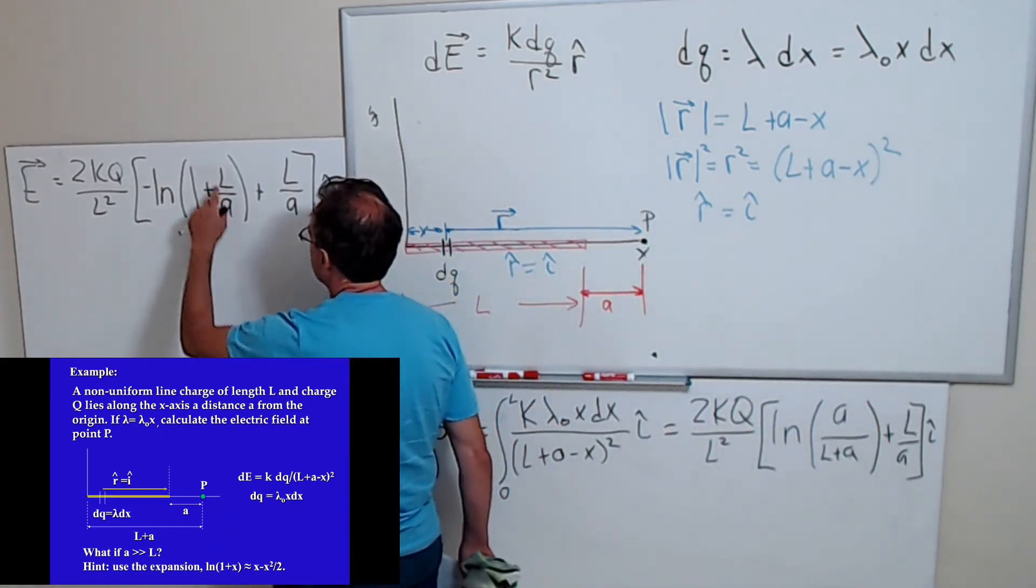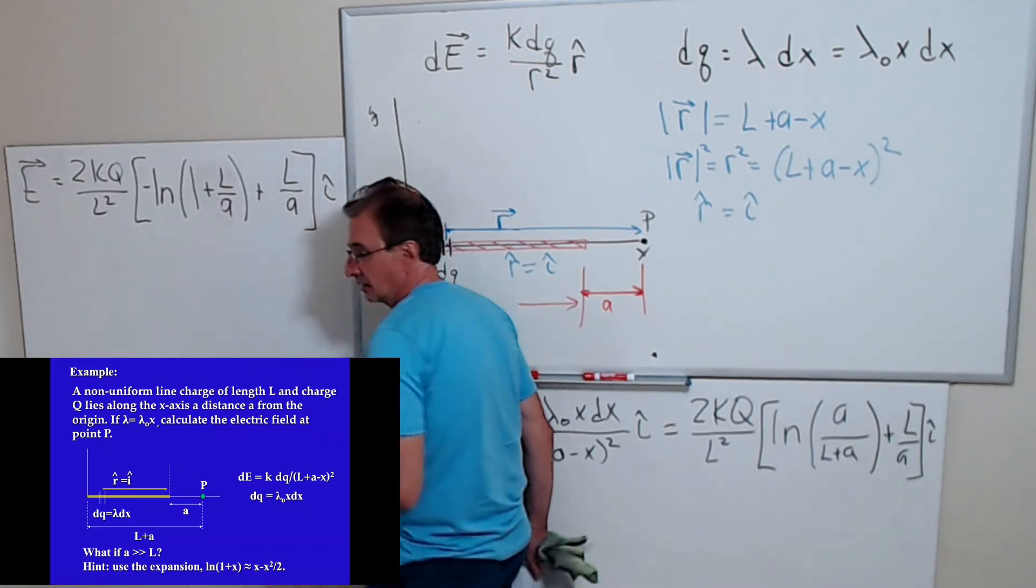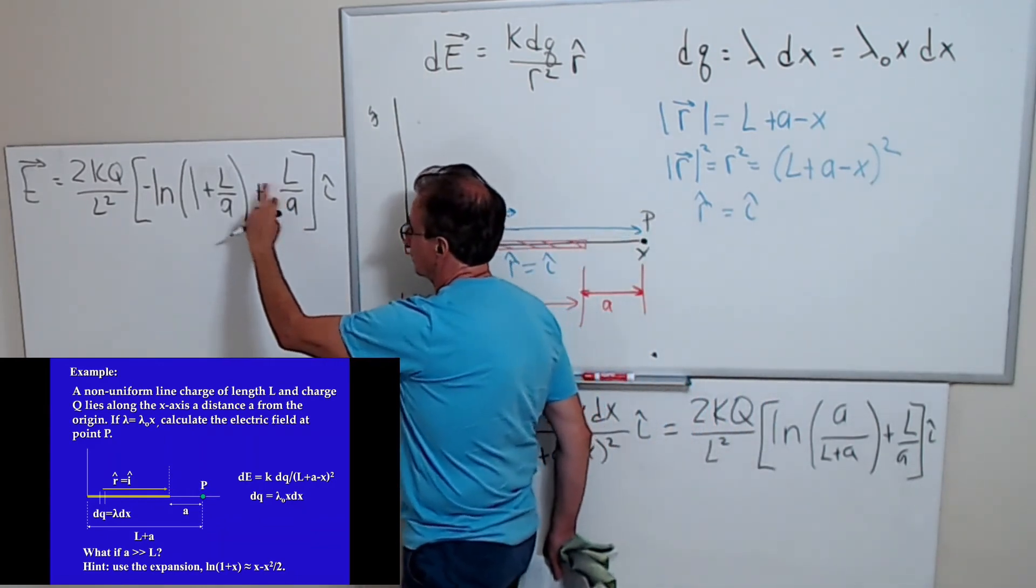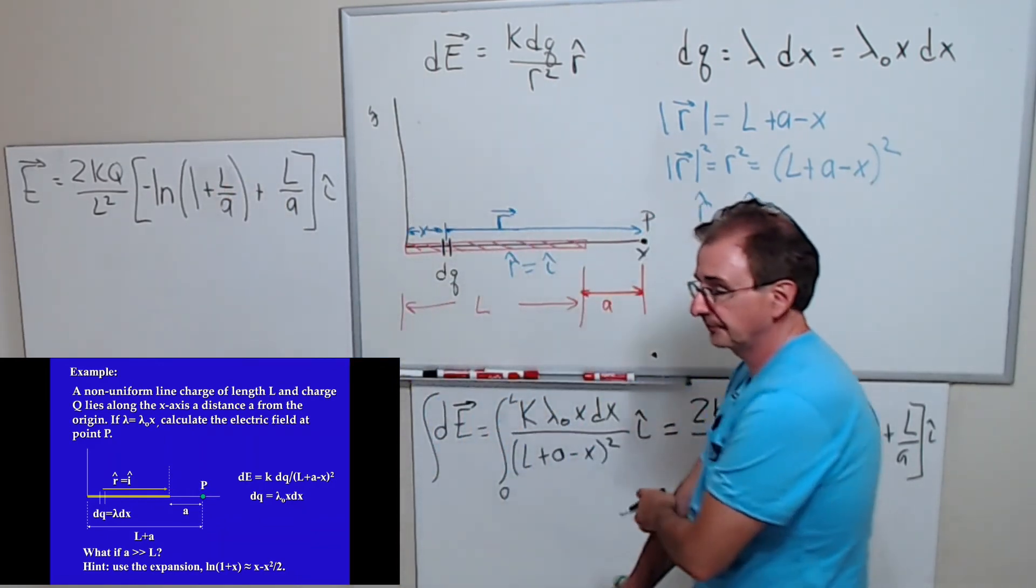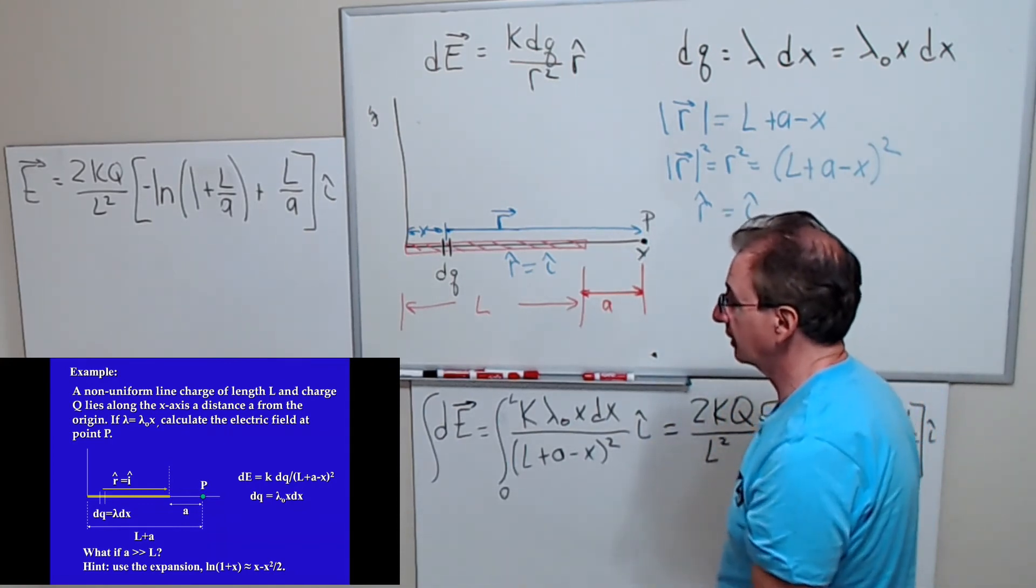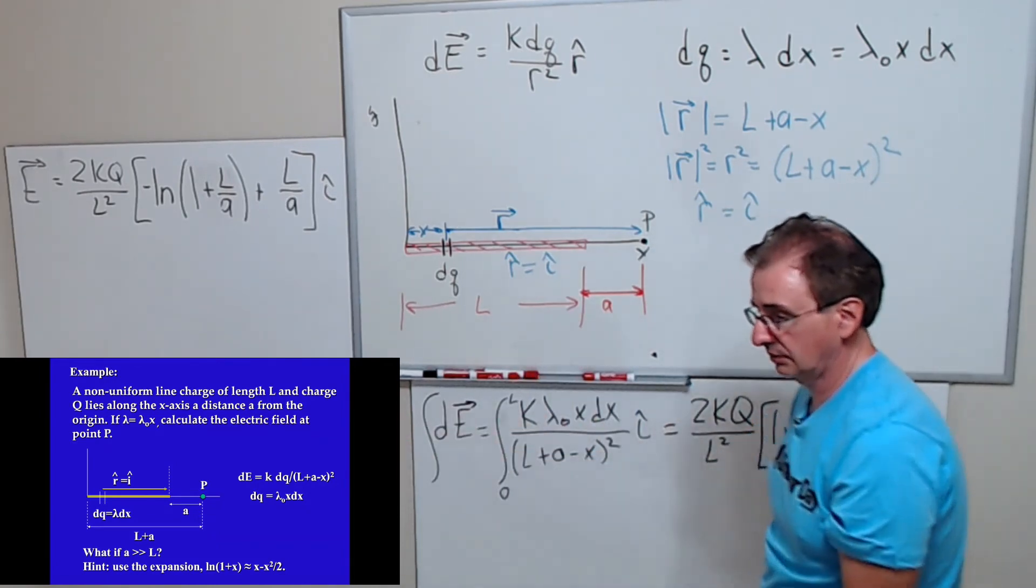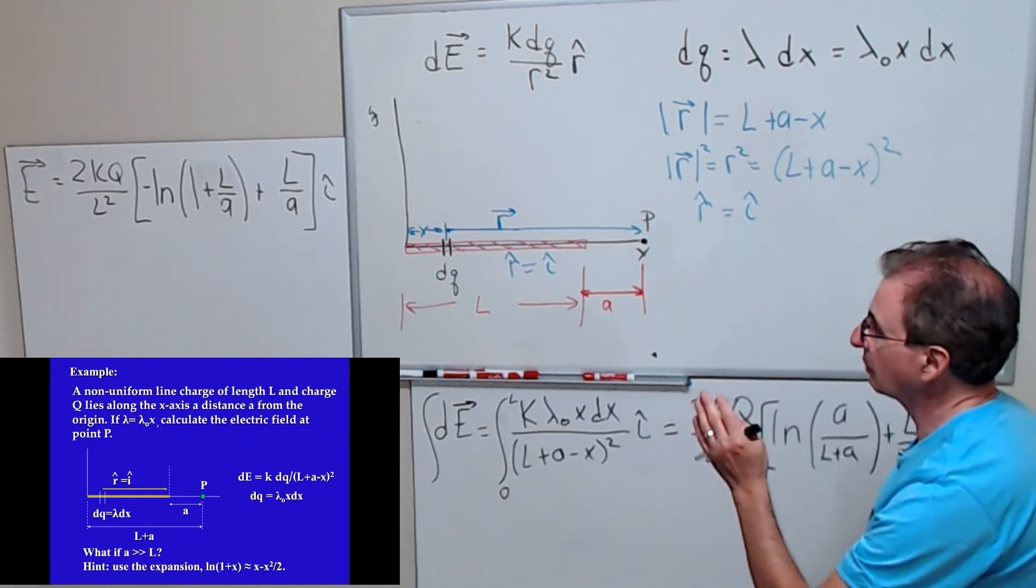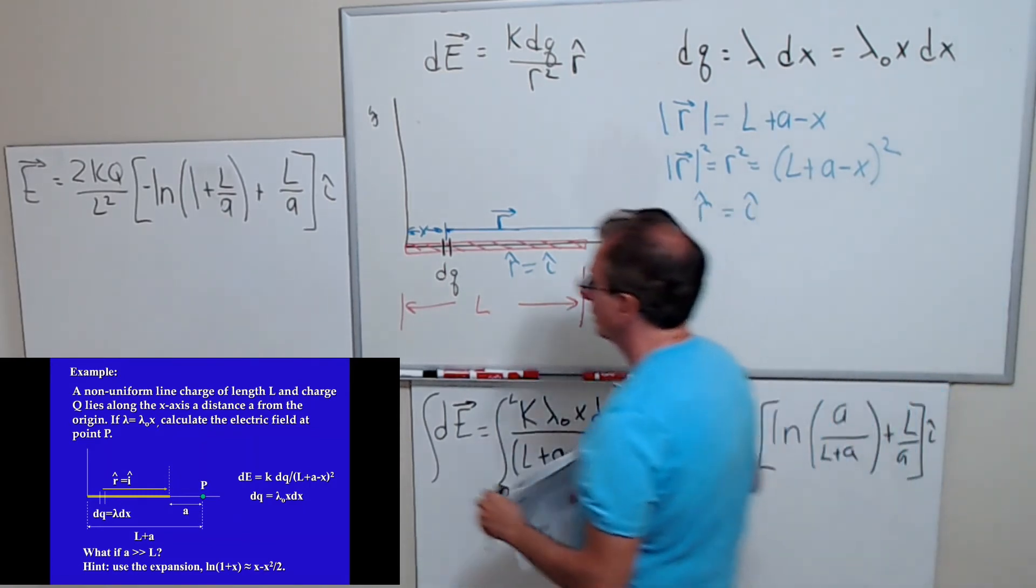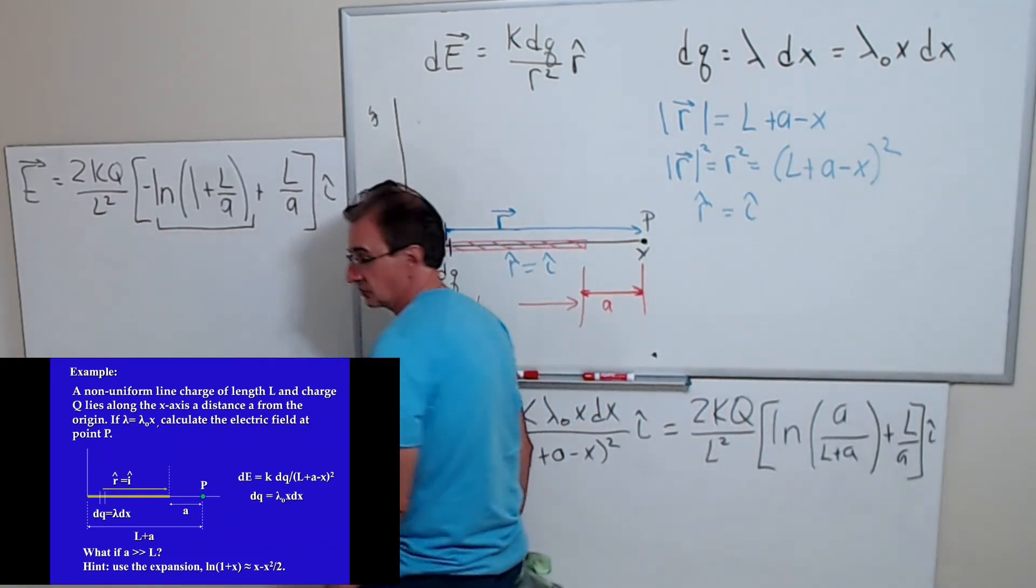Let's look at what happens if A is much, much bigger than L. This term is not going to be very large. It's going to be small. This term will be small, and this term will be small. I want to take a look at it in the limit where A is much, much bigger than L, but not infinitely far away. Obviously, if I'm infinitely far away, my electric field will be zero.